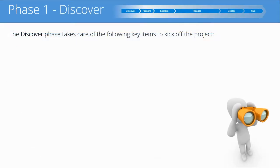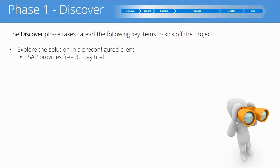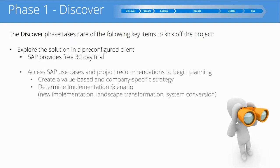The first phase in this implementation process is the Discover phase. This takes care of the following key items to kick off the project. The team would explore the solution in a pre-configured client — SAP provides a free 30-day trial, which is a wonderful option for the enterprise to get in and find out what SAP is all about. The team can then move on to accessing SAP use cases and project recommendations to begin planning for the implementation, utilizing the accelerators that SAP has provided.